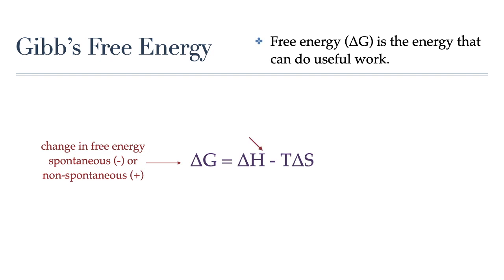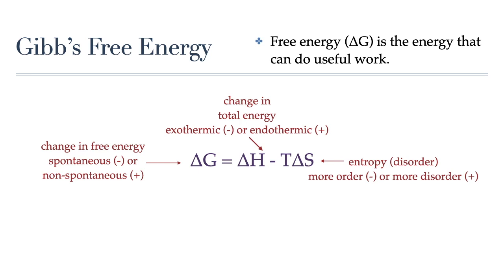So let's take a look at the variables in this equation. Delta H refers to the change in total energy — whether or not the reaction is exothermic and therefore gives off energy, or endothermic and absorbs energy from its surroundings. A change in entropy is delta S — that's the measure of order or disorder, with a negative delta S meaning the system becomes more ordered, and a positive delta S meaning that the system becomes more disordered. And T is temperature, which is measured in Kelvin, and Kelvin is always a positive value, so there are no negative temperatures.